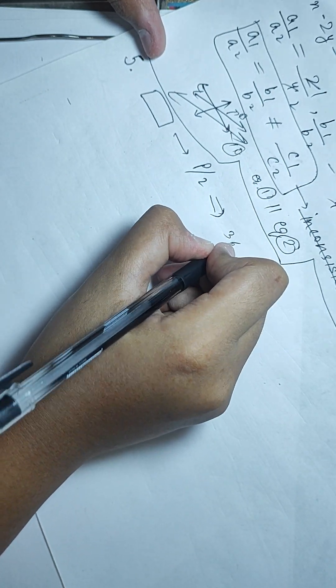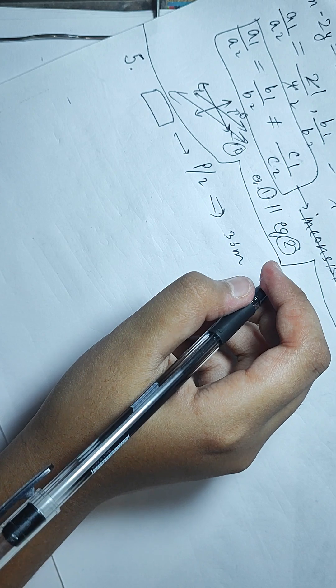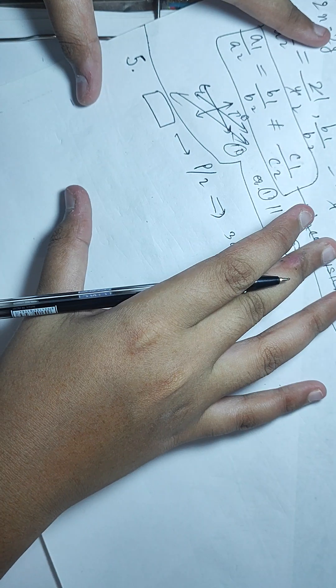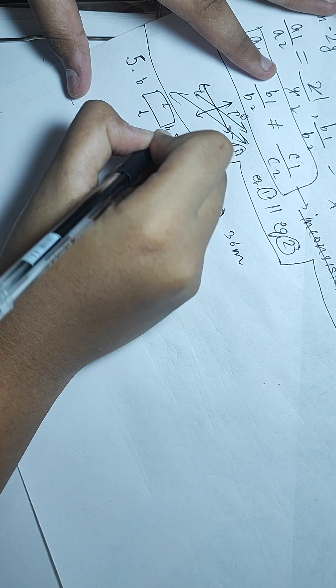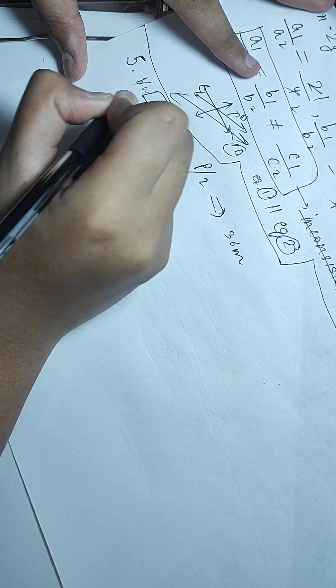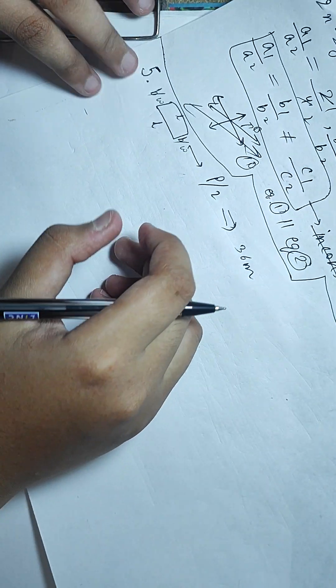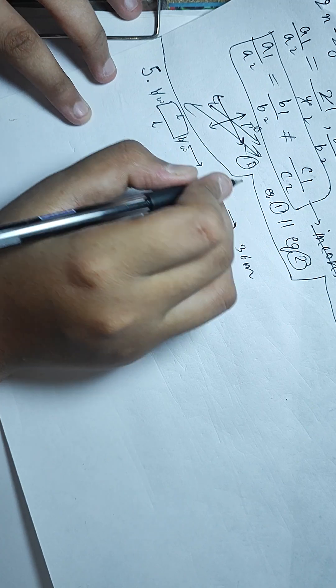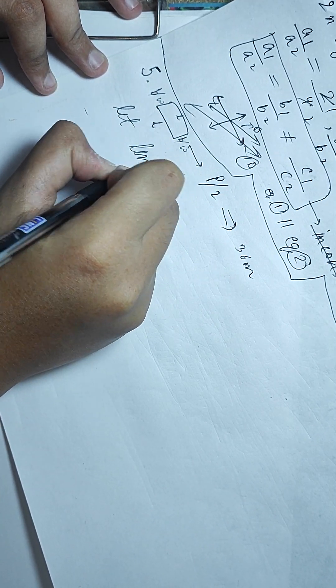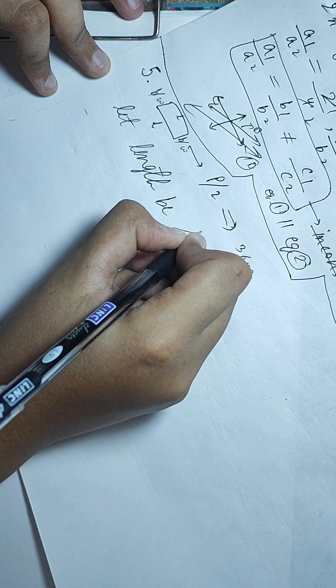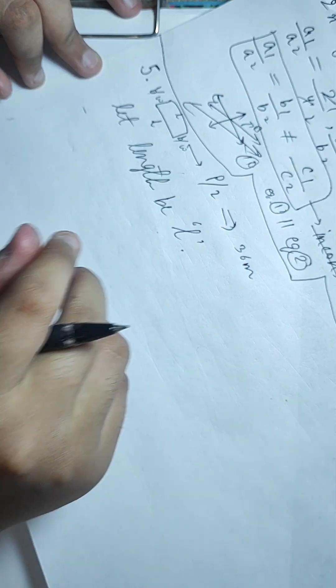We are going to find the dimensions of this garden, meaning length and breadth or width. Let length be L.